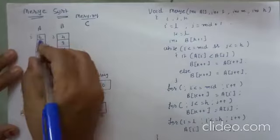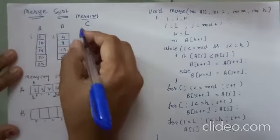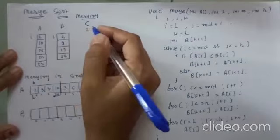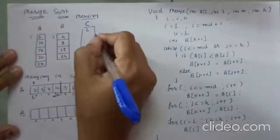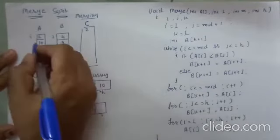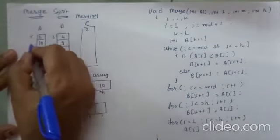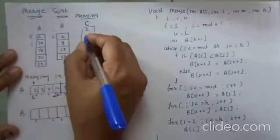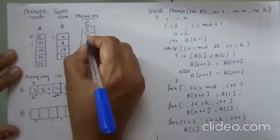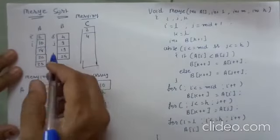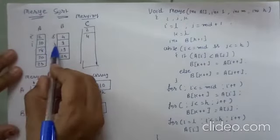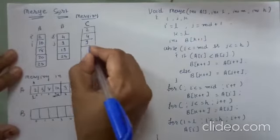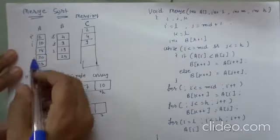We will compare 2 and 4 — as 2 is smaller, 2 is copied into array C. Then I will increment pointer I. Again I will compare I and J; J is smaller, so J is copied and J is incremented. Again we will compare I and J — still J is smaller, so 9 is copied and we increment J.